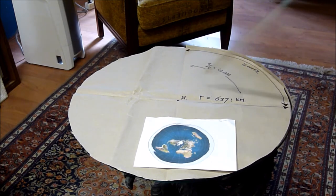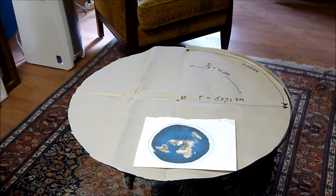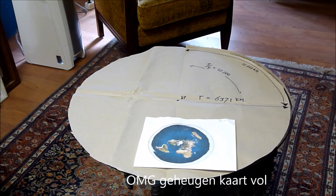En daar hoort bij een straal van 6300 kilometer, oftewel 6,3 miljoen meter. En dit stukje is dus 10.000 kilometer, is 10.000.000 meter. En wat is nou de meter?